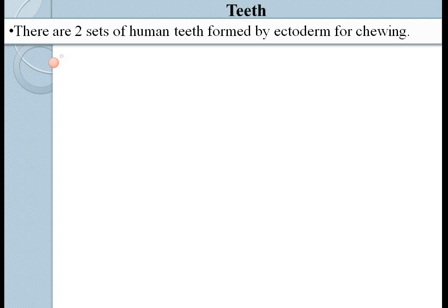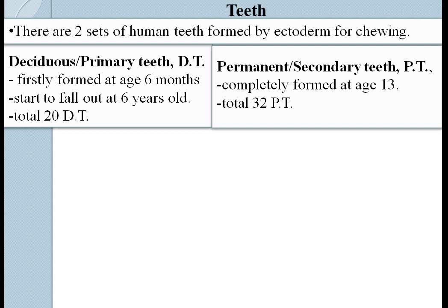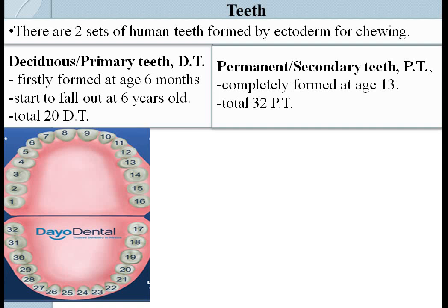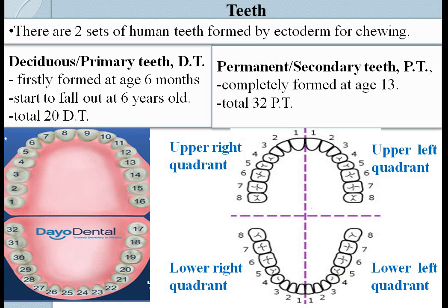There are two sets of human teeth. Deciduous teeth, also called primary teeth or milk teeth, are formed at the age of 6 months and start to fall out at the age of 6 years; they total 20 in number. Permanent teeth, also called secondary teeth, are completely formed by age 13 and total 32 in number. The teeth are arranged in the mouth in two arches, and each arch contains two quadrants: upper right, upper left, lower right and lower left quadrant. Each quadrant contains eight teeth.